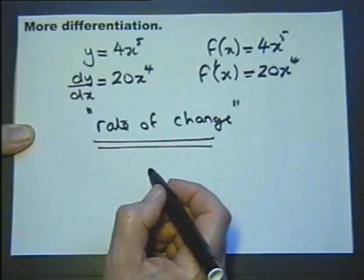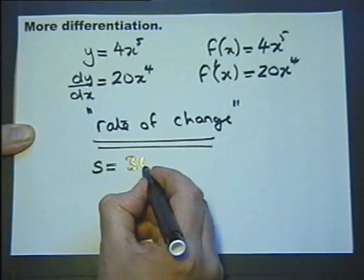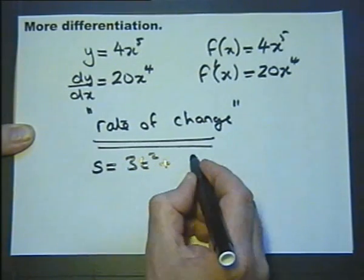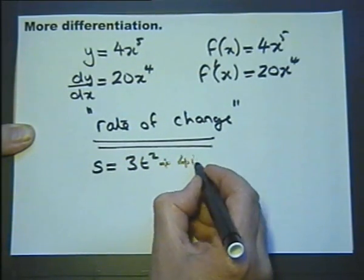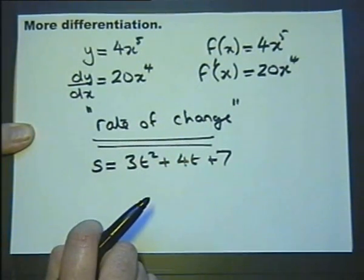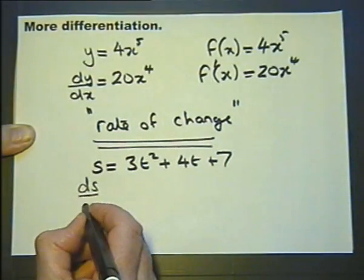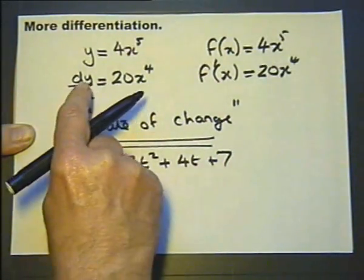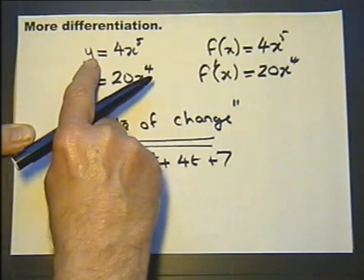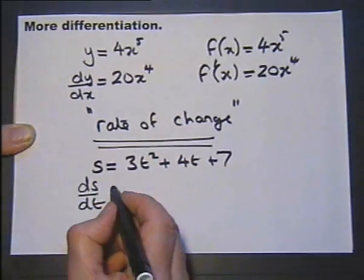The other thing I need to mention is the equation doesn't have to be x and y. It could be any two letters. And when we do equations with distance, we'll find that s is the letter that's used for distance. So if we differentiate this equation, we'll get ds dt. When we differentiated this equation, we've got dy dx. If we differentiate this equation, we get ds dt.